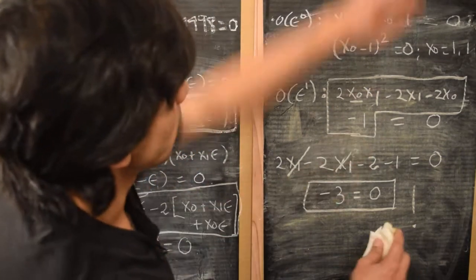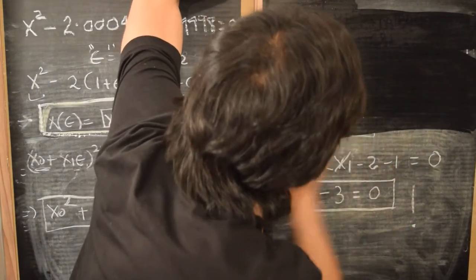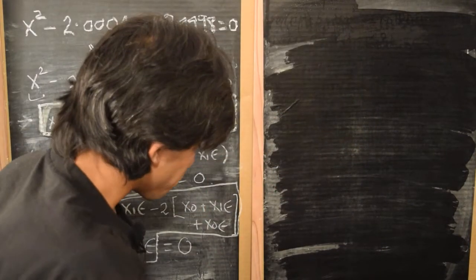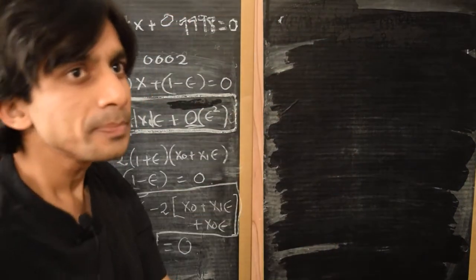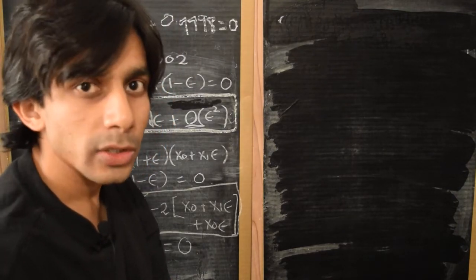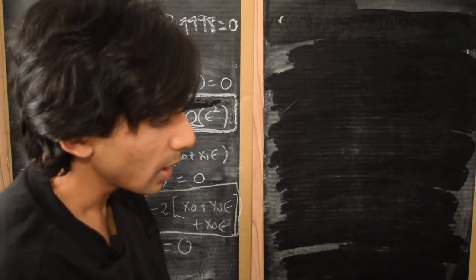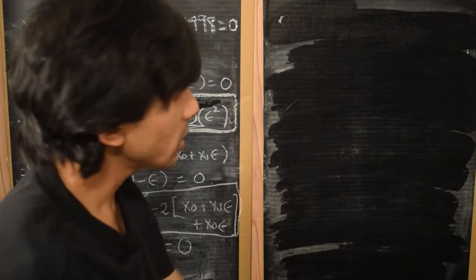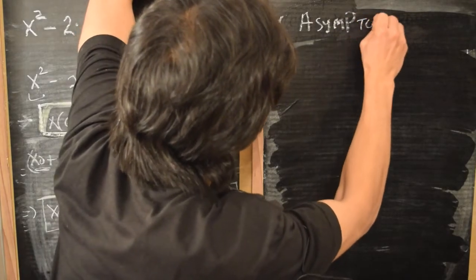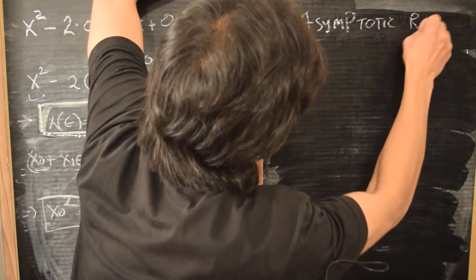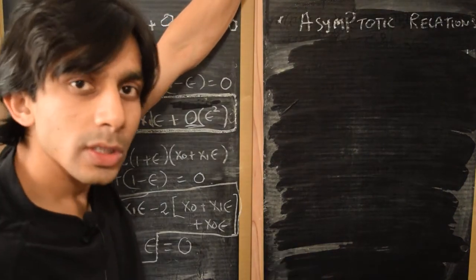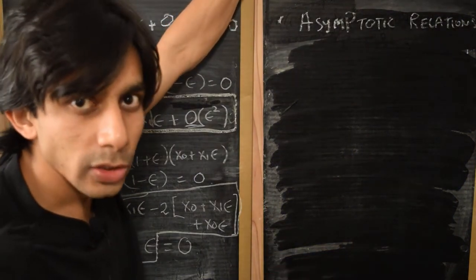Let's introduce a couple of new ideas before we proceed to see what exactly went wrong. These are two notions which are used quite often in the study of perturbation methods and are sometimes called asymptotic relations. These are relations between functions, just like big-O was a relation between two functions that we talked about in a previous video.